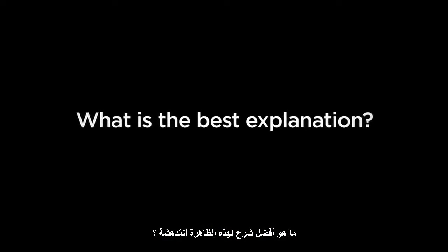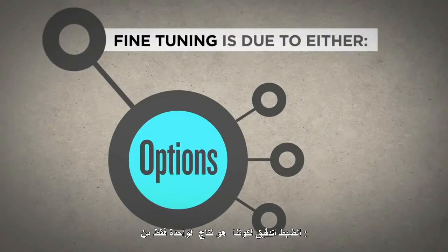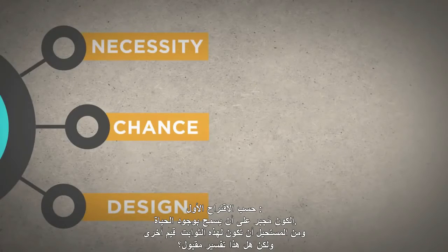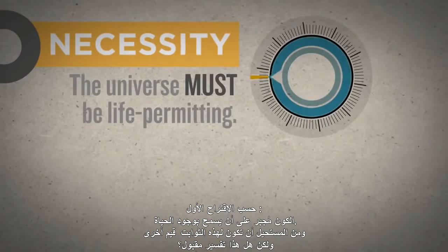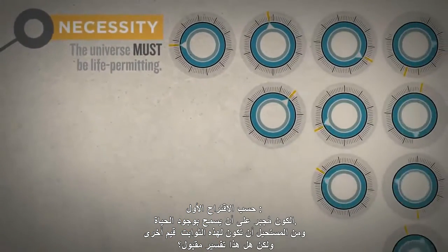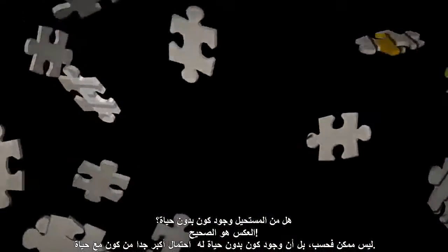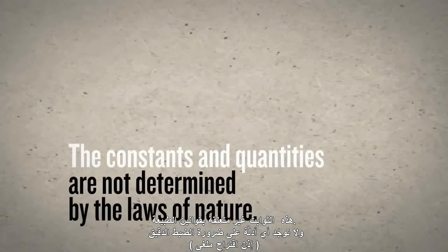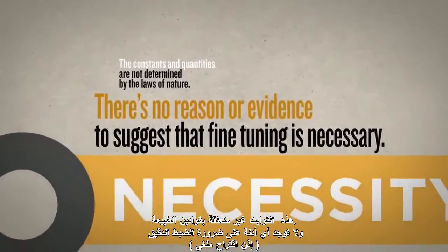What is the best explanation for this astounding phenomenon? There are three live options: the fine-tuning of the universe is due to either physical necessity, chance, or design. According to the first alternative, the universe must be life-permitting — the precise values of these constants and quantities could not be otherwise. But is this plausible? Is a life-prohibiting universe impossible? Far from it. It's not only possible, it's far more likely than a life-permitting universe. The constants and quantities are not determined by the laws of nature, and there's no reason or evidence to suggest that fine-tuning is necessary.